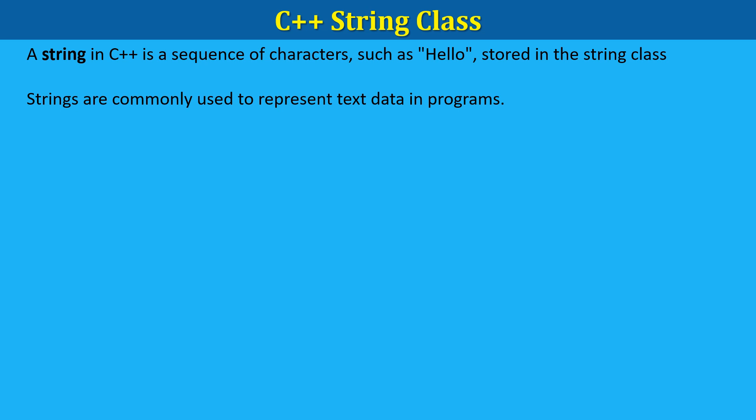The C++ string class manages memory automatically — you don't need to manually allocate or deallocate memory like you do with character arrays. This makes strings both safer and easier to use. Strings are commonly used to represent text data in programming. A string variable contains a collection of characters surrounded by double quotes. To use strings, include the string header file. Then create a variable of type string and assign a value: string greeting = "hello".